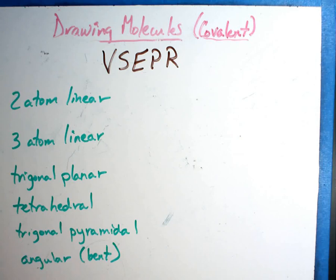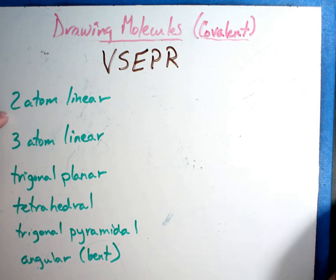All right, we just learned how to draw molecules. Some have single bonds, double bonds, and triple bonds. They actually come together. Scientists have learned how to categorize things because they look so similar to one another. And so it is what is called VSEPR.